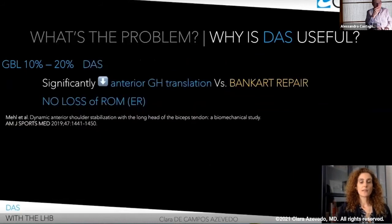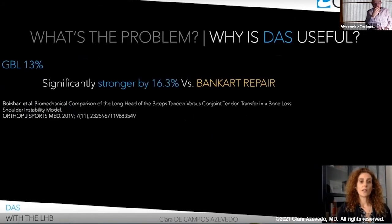So again, why is DASH useful? In subcritical glenoid bone loss ranging from 10% to 20%, DASH has been shown to significantly decrease anterior glenoid remote translation when compared with Bankart repair, with no loss of range of motion, particularly external rotation. In another biomechanical study with glenoid bone loss of 13%, DASH was shown to be significantly stronger by 16.3% when compared with Bankart repair.